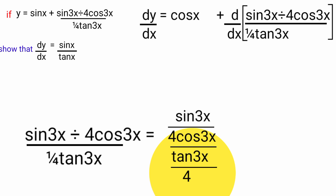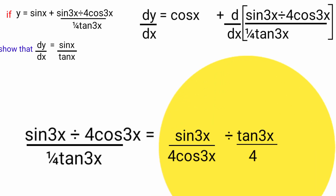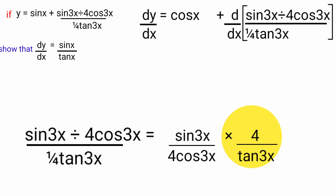So this is now sin 3x over 4 cos 3x, all over tan 3x over 4. We can change this division to multiplication by replacing tan 3x over 4 with its reciprocal, which is 4 over tan 3x.